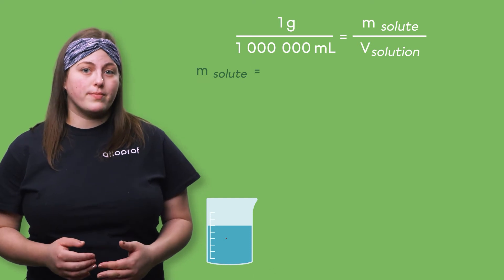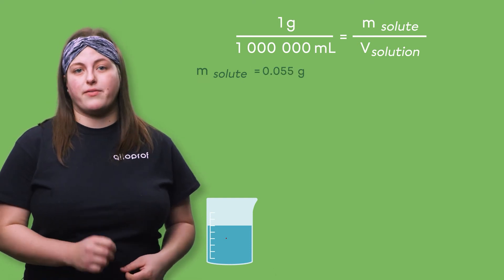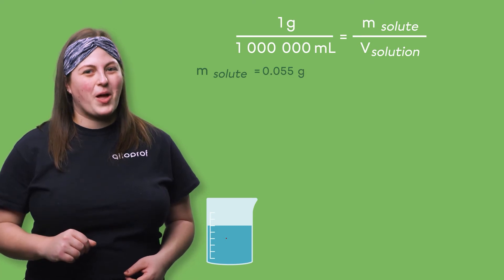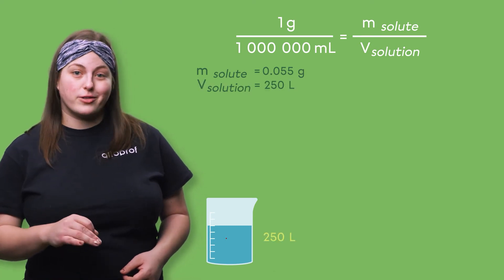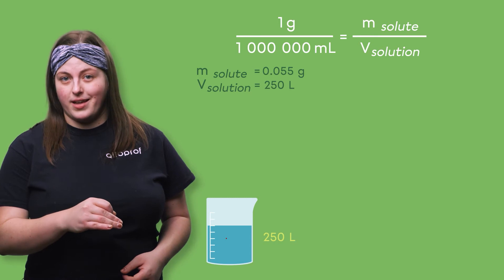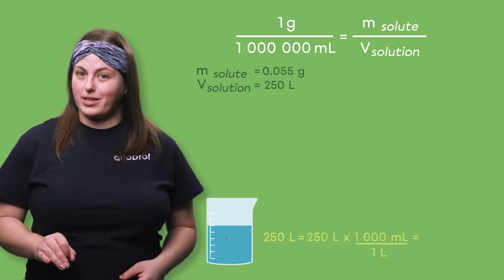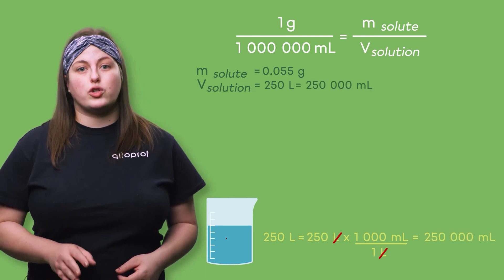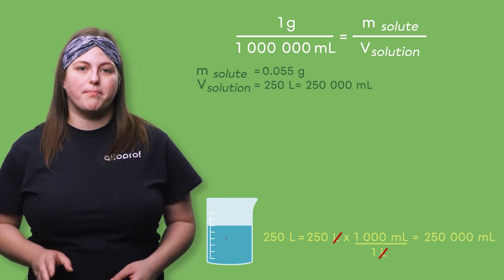The mass of our solute, 0.055 grams, is already in grams so there's nothing to change there. Our 250 liter solution is measured in liters. We have to convert it into milliliters.